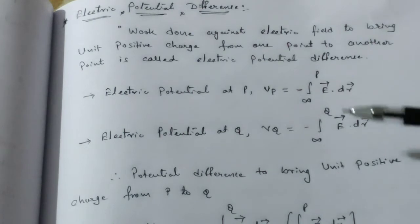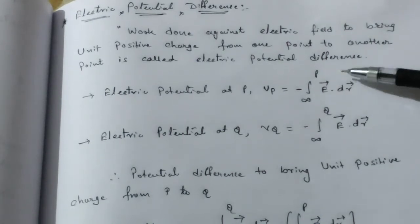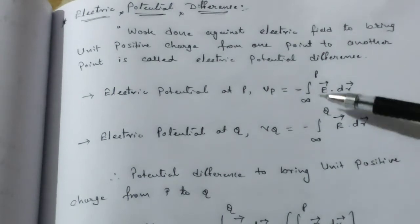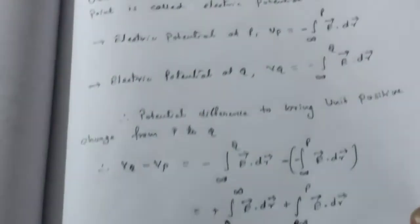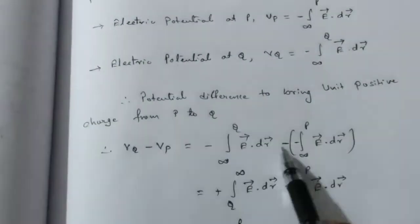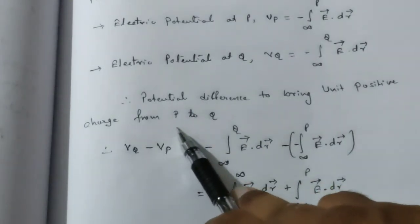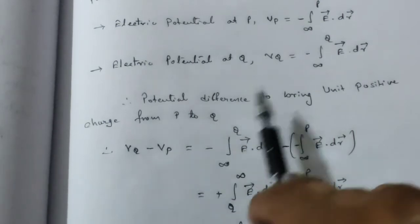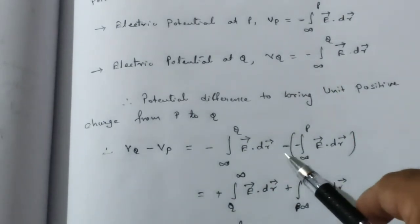Now taking the difference to bring unit positive charge from P to Q. Taking difference VQ minus VP and putting these two values, we have negative signs so minus minus becomes plus, and we interchange the sign for integration.